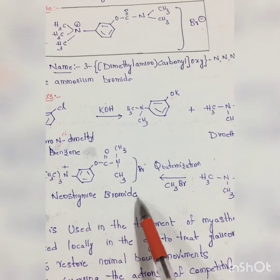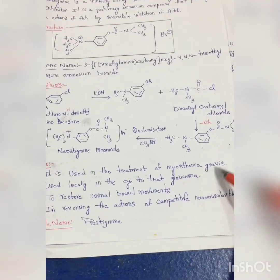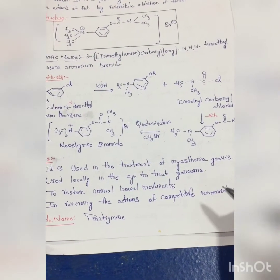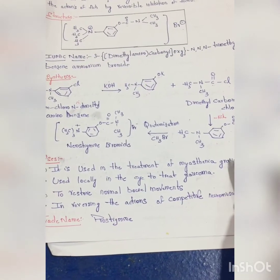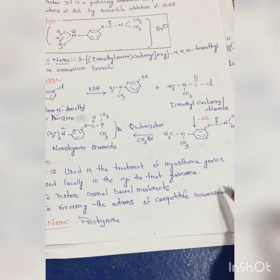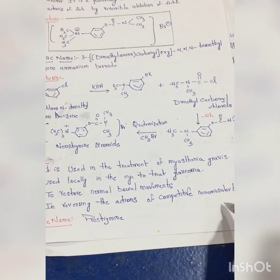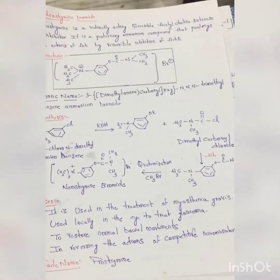Coming to the uses: it is used in the treatment of myasthenia gravis - I will tell about myasthenia gravis in the next video. Used locally in the eye to treat glaucoma. To restore normal bowel movements, and in reversing the actions of competitive neuromuscular blockers. This is all about Neostigmine Bromide.